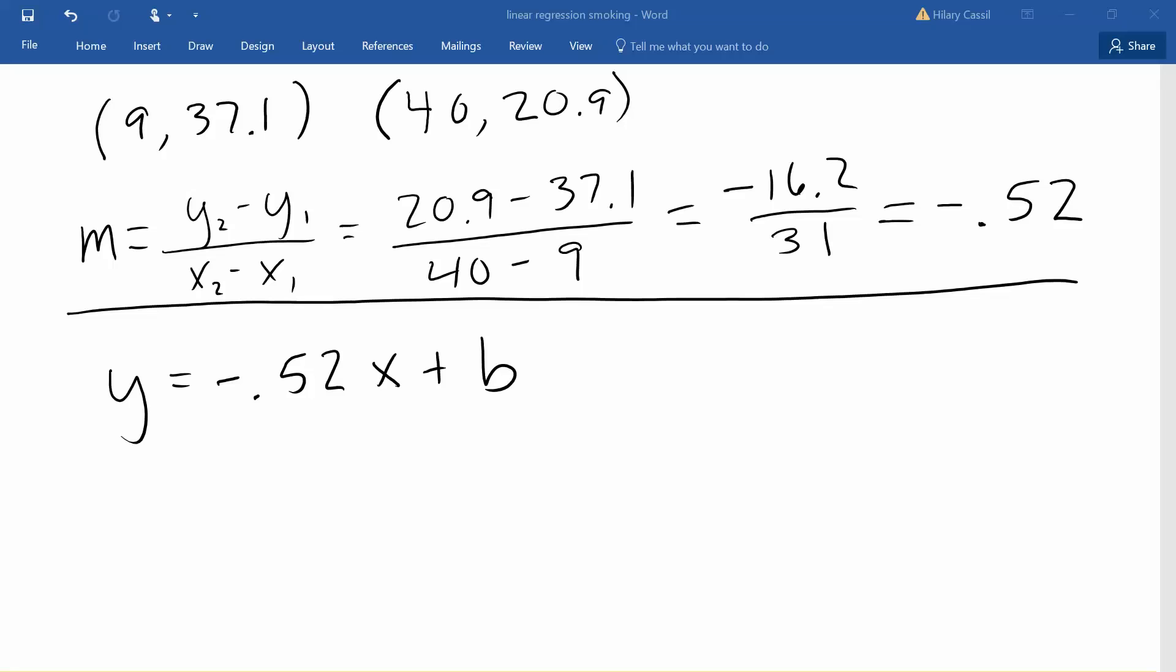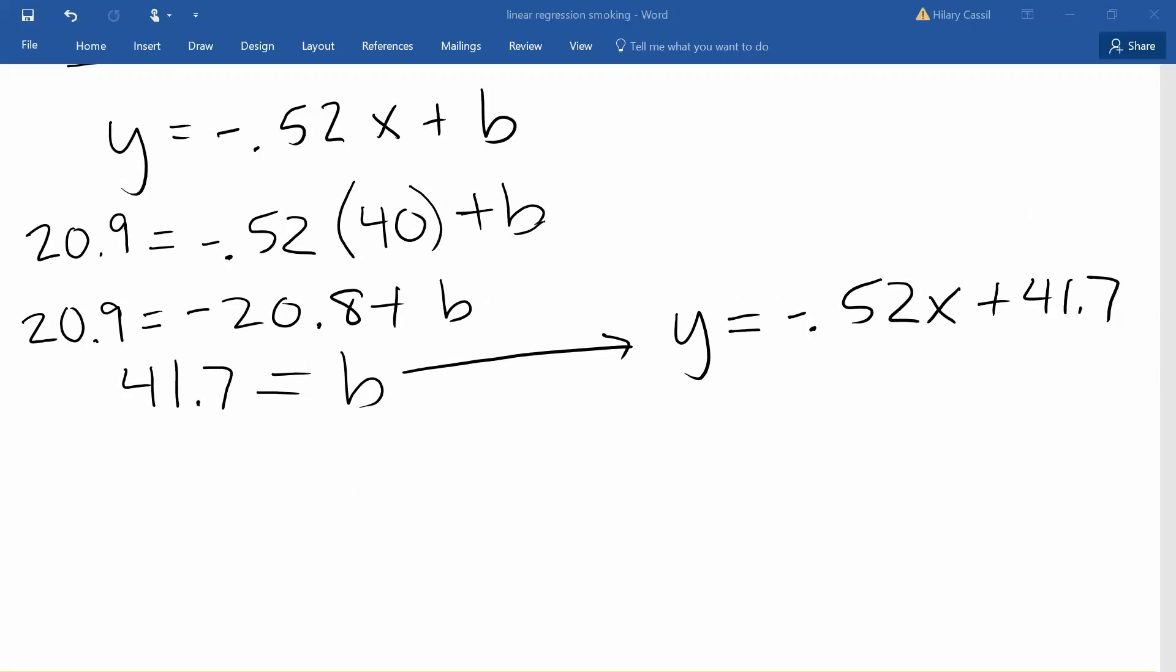If I use the second point, we will replace the y value with 20.9 and the x value with 40 and solve for b. We will get a b value of 41.7, so the final equation of the line that we're going to use is y equals negative 0.52x plus 41.7.